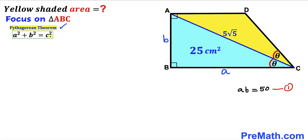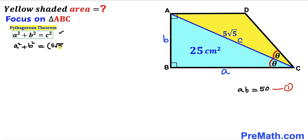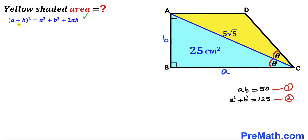Now recall the Pythagorean theorem: a² + b² = c². Here, the hypotenuse c is 5√5. Substituting: a² + b² = (5√5)² = 125. Call this Equation 2.